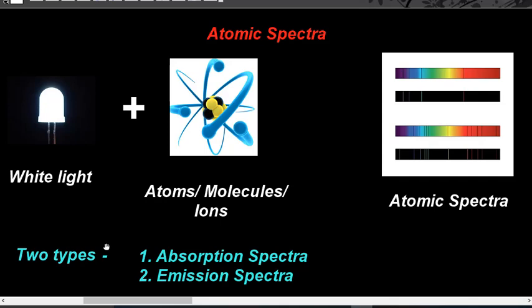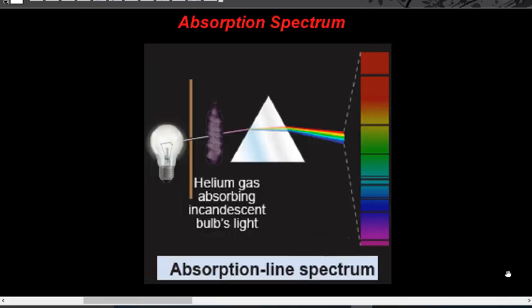The atomic spectra are of two types: one is the absorption spectra and the other is the emission spectra. The absorption spectra, as the name suggests, is obtained when atoms or molecules of a matter interact with white light and some of the wavelengths are absorbed by the matter. So the spectrum has some wavelengths missing, and that spectrum is known as the absorption spectra.